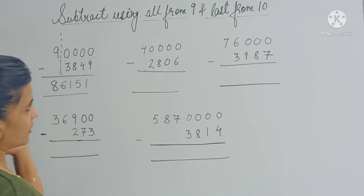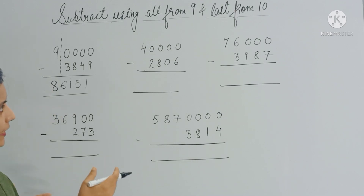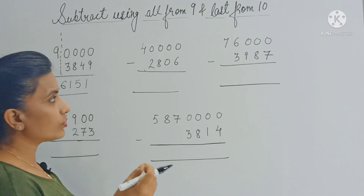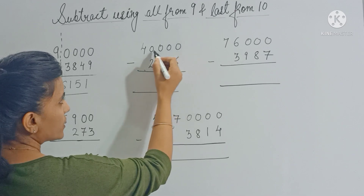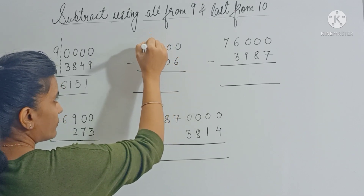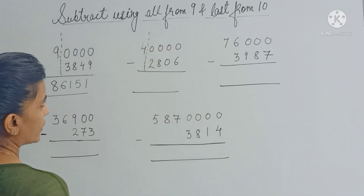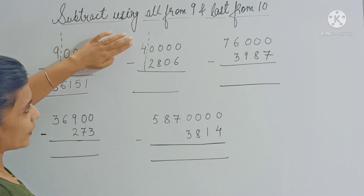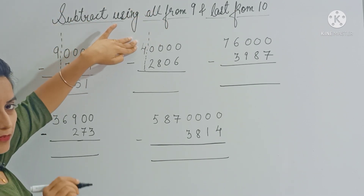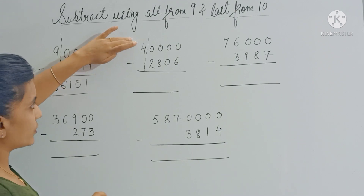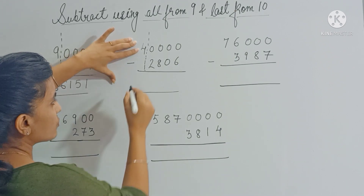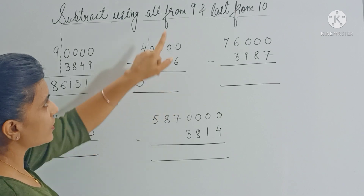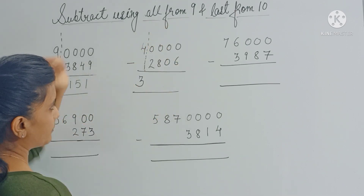Now let's check the second question. Again, step 1: separate all the zeros — you have 4 zeros here, dividing the question into a left half and a right half. In the left half we reduce the number by 1, so 4 minus 1 is 3. On the right side apply the rule 'all from 9, last from 10.'